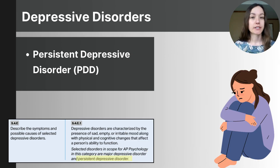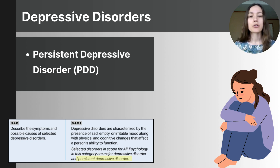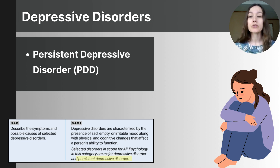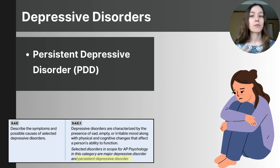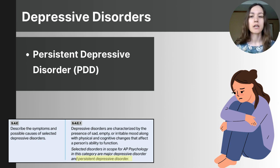The next depressive disorder is persistent depressive disorder, formerly called dysthymia. It is a chronic form of depression lasting at least two years in adults, or at least one year in children and adolescents. While symptoms are typically less severe than major depressive disorder, they are longer lasting and can significantly affect daily life. To be diagnosed, an individual must experience depressed mood most of the day, more days than not, for at least two years, along with at least two of the following: poor appetite or overeating, insomnia or excessive sleeping, low energy or fatigue, low self-esteem, difficulty concentrating, or feelings of hopelessness. Symptoms must cause distress or impairment and cannot be due to another medical condition or substance use.